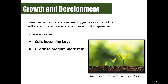The next criterion is growth and development. The inherited DNA we discussed is carried by genes, and those genes control the pattern of growth and development for organisms. Cells become larger, divide, and produce more cells. A great example can be found on YouTube — search 'time-lapse of a plant.' There's an excellent video showing a six-month time-lapse of a forest, where you can watch organisms grow and develop over time.